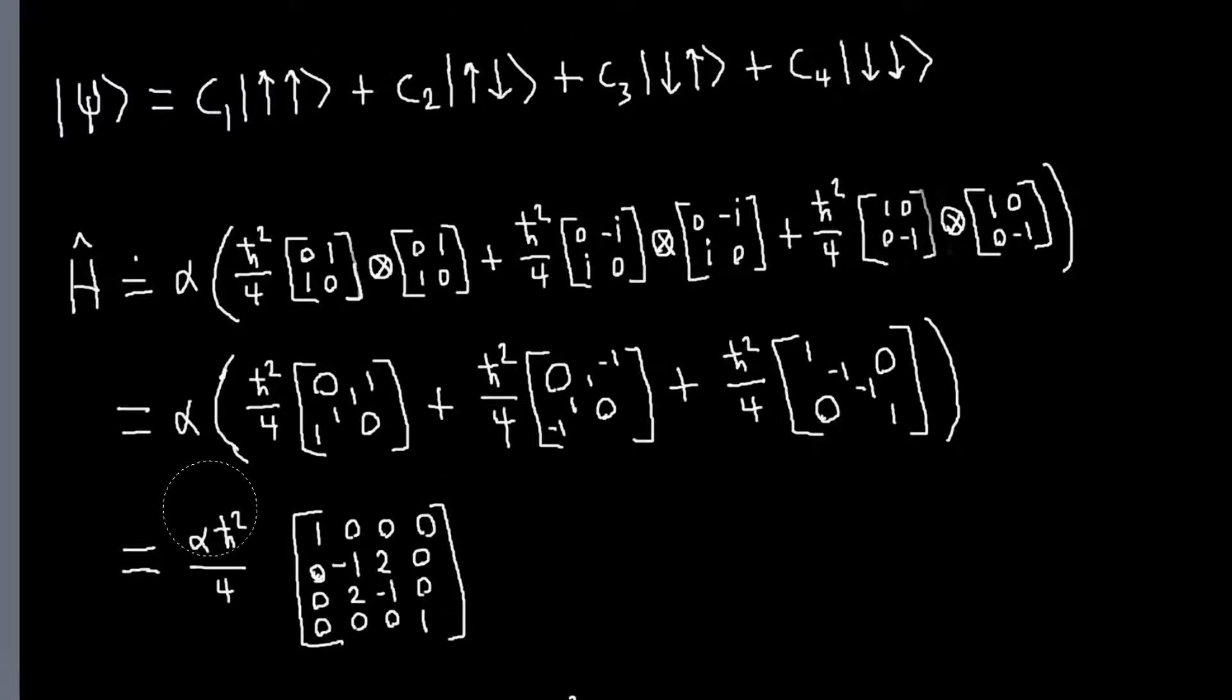You could verify by multiplying this by the column vectors we use to represent these. So this one is 1, 0, 0, 0, and this one would be 0, 0, 0, 1. And if you multiply those, you'll see that they are eigenvectors.